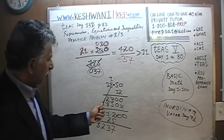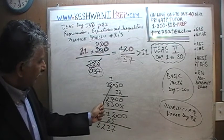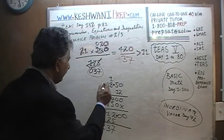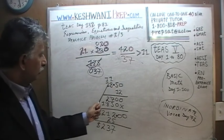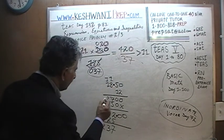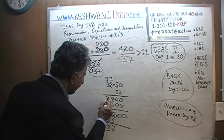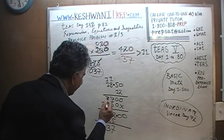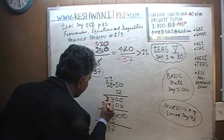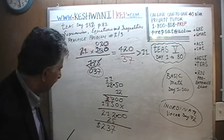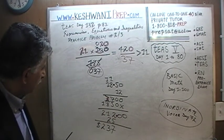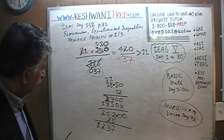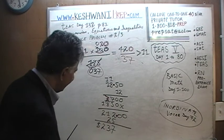2 times 8 is 16 plus 1 is 17 — that's 7, carry 1. And 2 times 1 is 2, plus 1 is 3. This should have been 3. Well, if that's 3, then 3 plus 8 is 11.